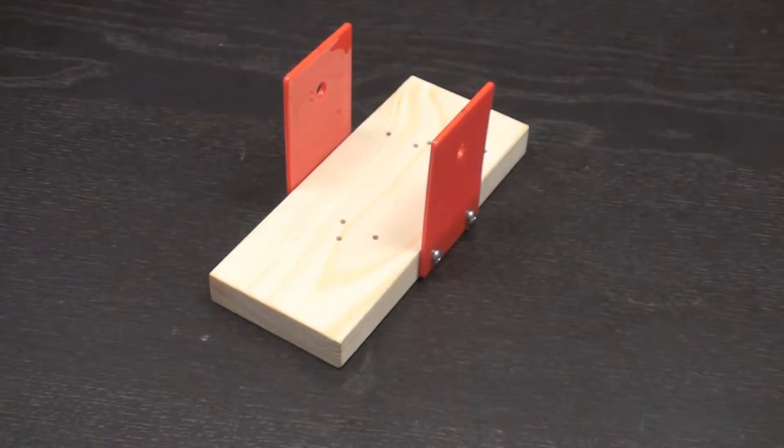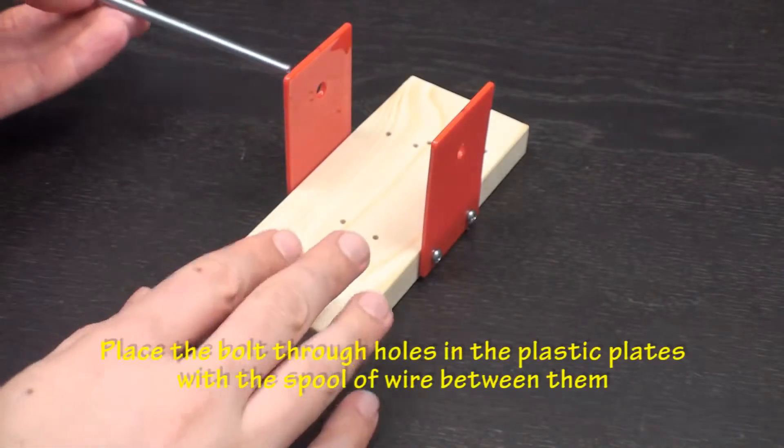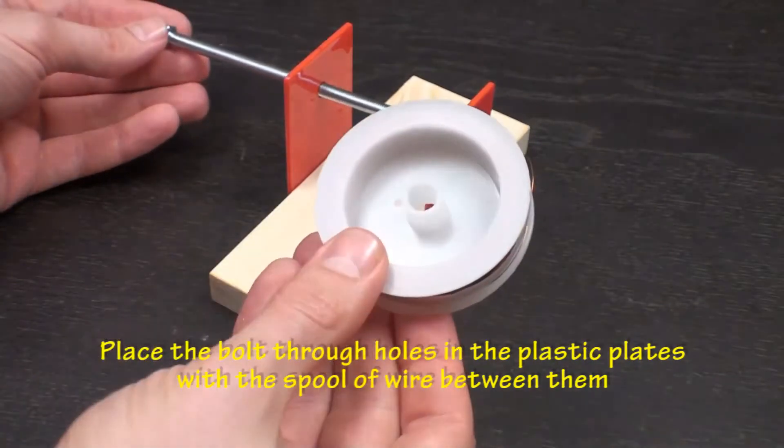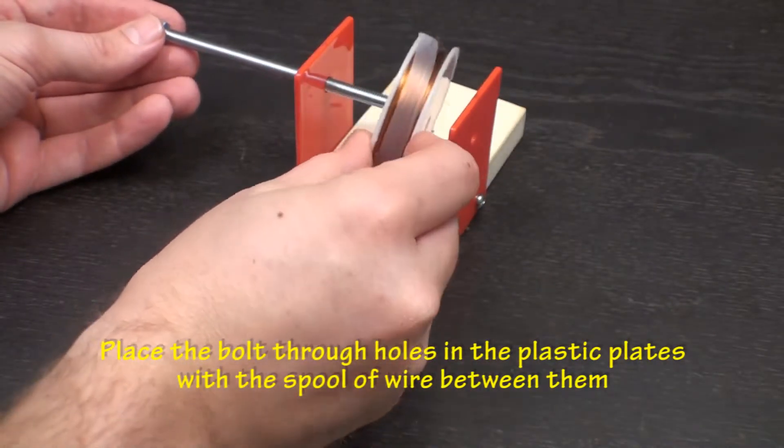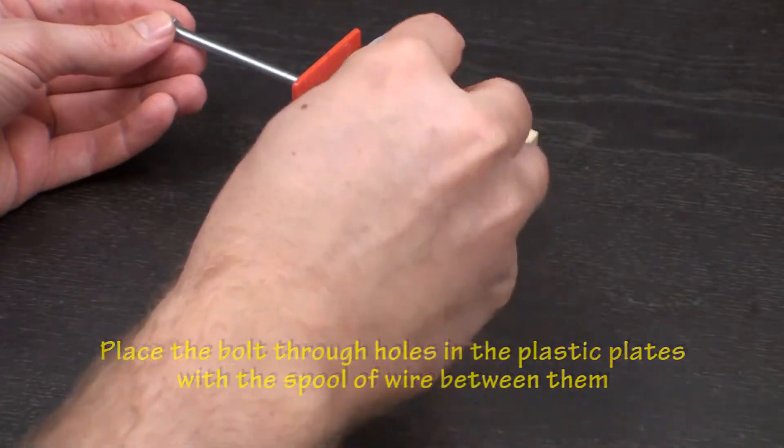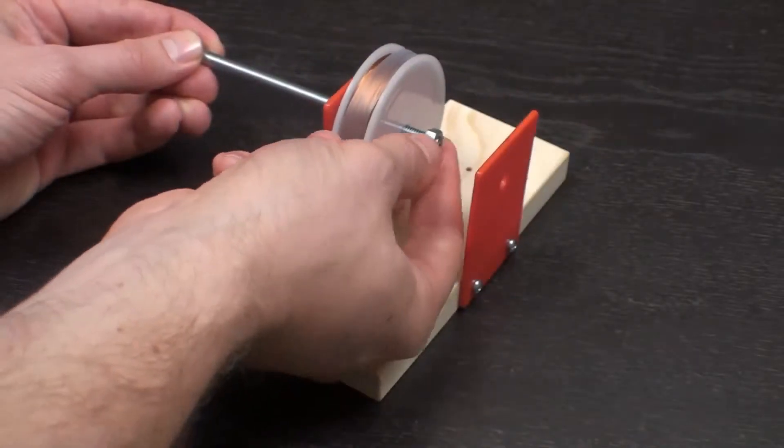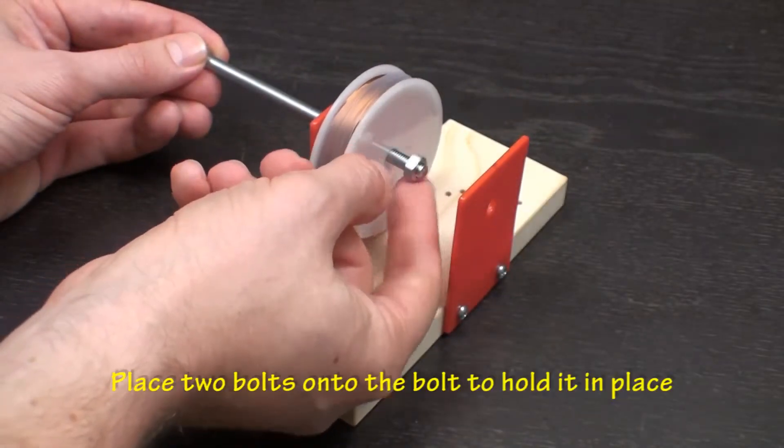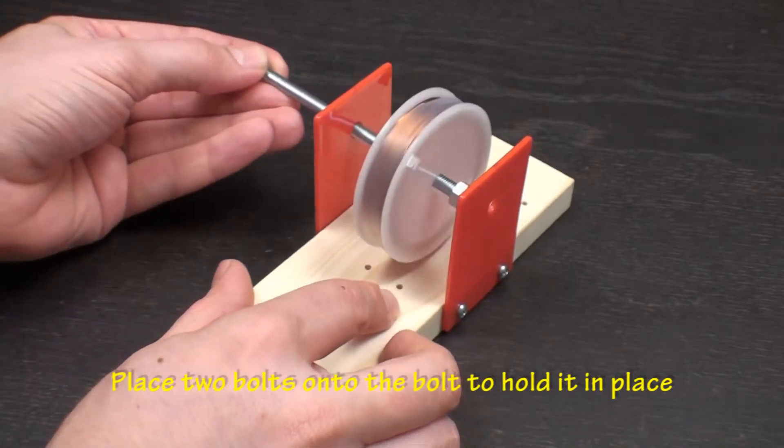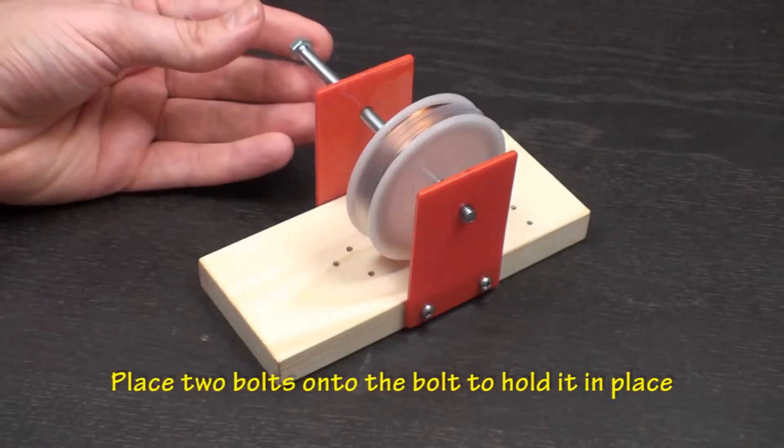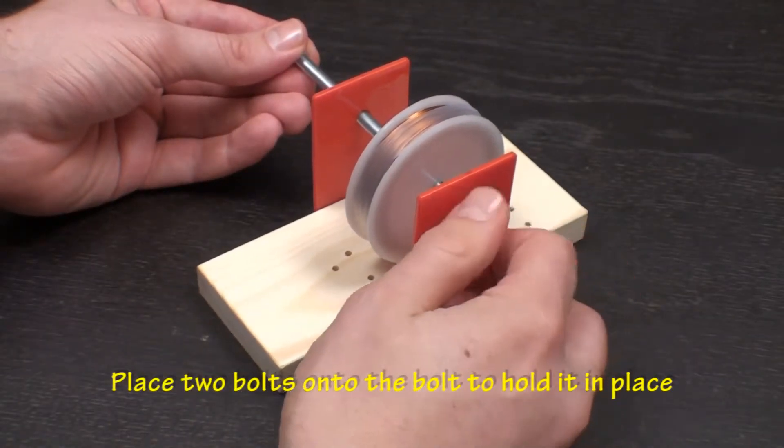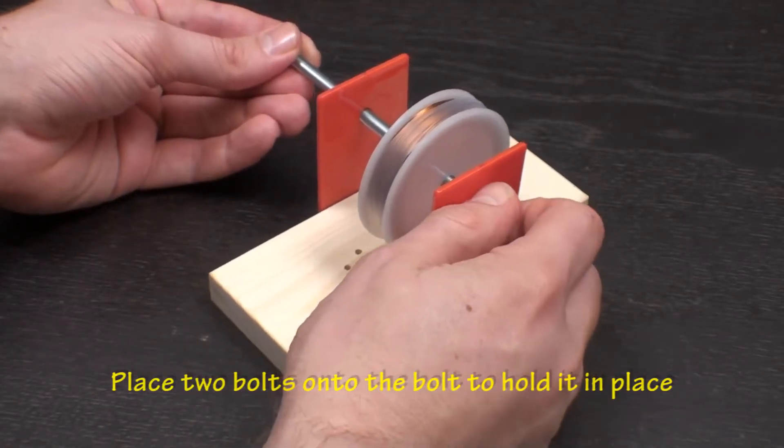Next, take the bolt and place it through one of the holes in the plastic plates. Take the spool of magnetic wire and put it on the bolt. Now, take a nut and screw it onto the bolt. Then, place the bolt through the hole in the other plastic plate. Screw another nut onto the outside of the bolt. This will help keep the bolt from falling out.